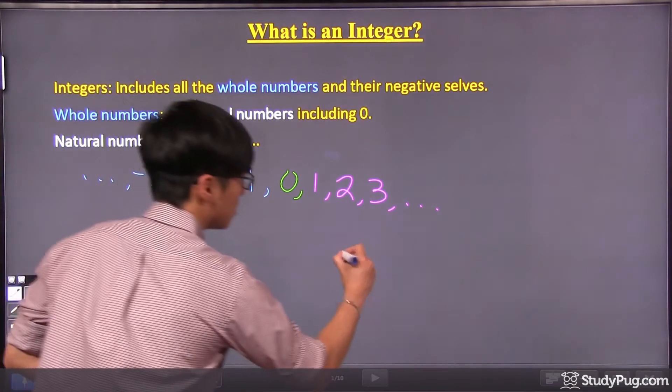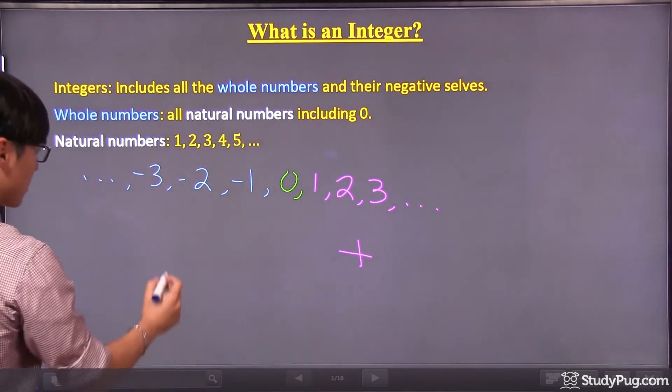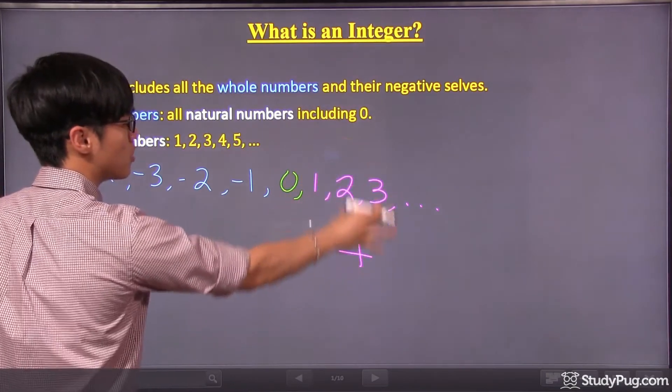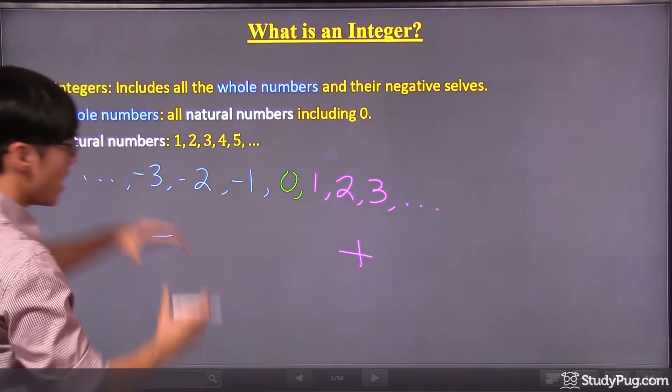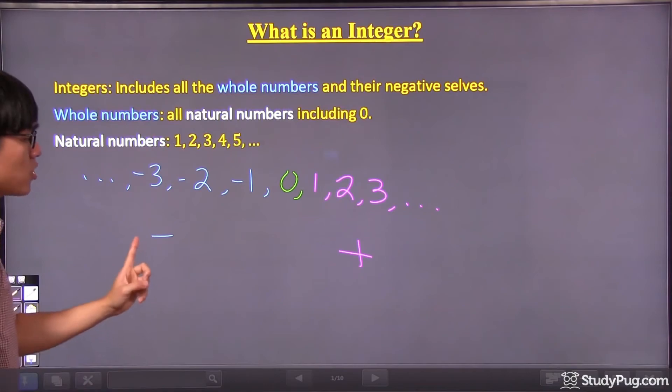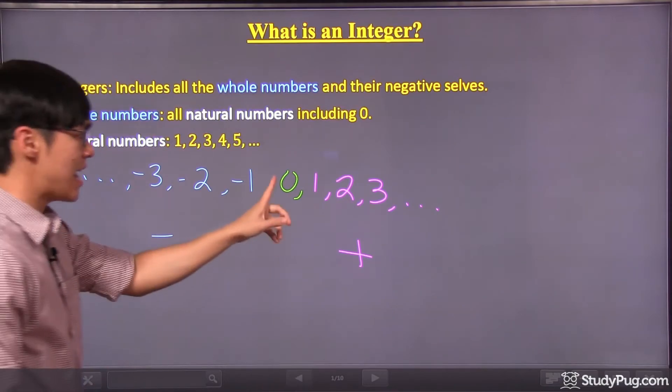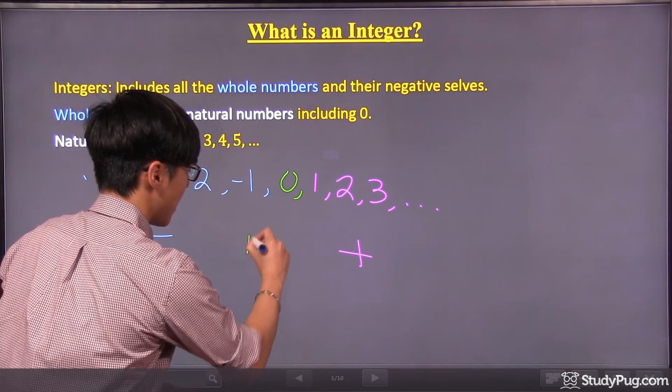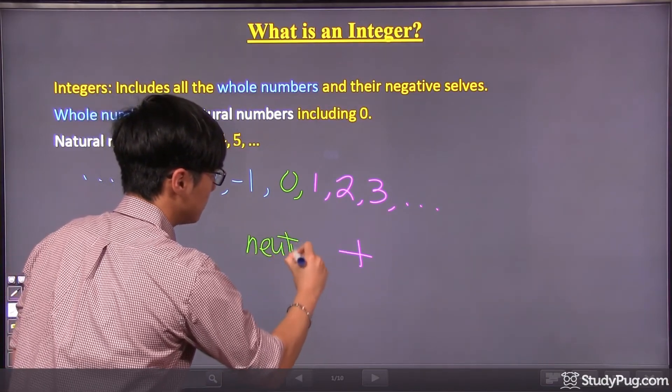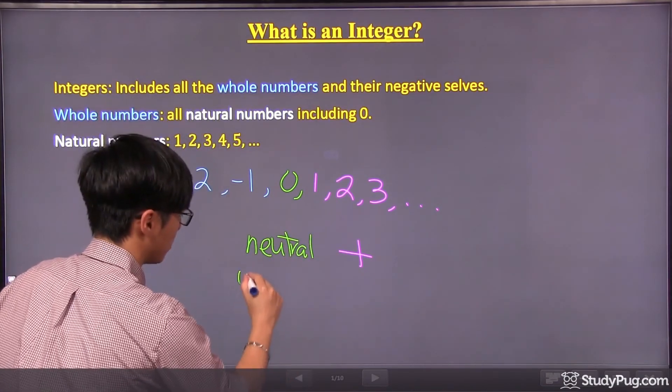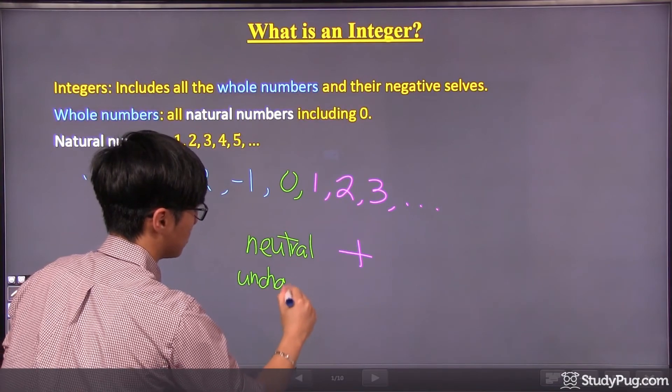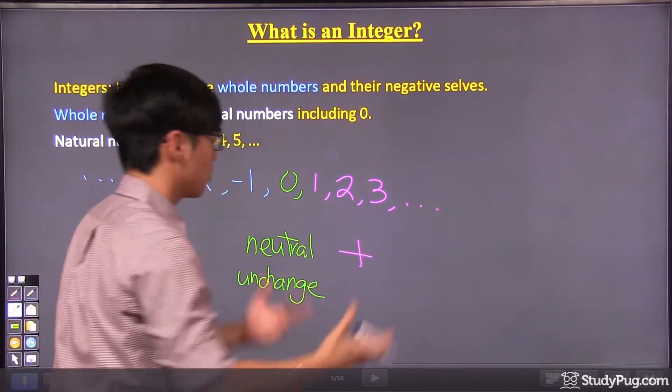So let me write it down in case it's not clear enough. We have the pink portion, which corresponds to the positives. We have the blue portion, which corresponds to the negative. And the zero, zero you can think of it as a neutral or unchanged. Because zero is neither positive nor negative.